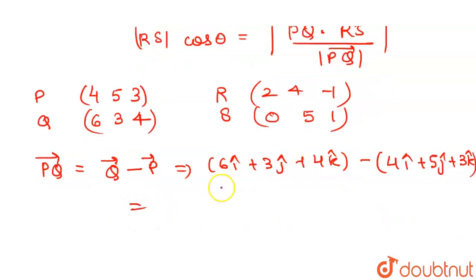So PQ vector will be: 6 minus 4 is 2i, 3 minus 5 is -2j, and 4 minus 3 is +k. So this is our PQ vector: 2i - 2j + k.